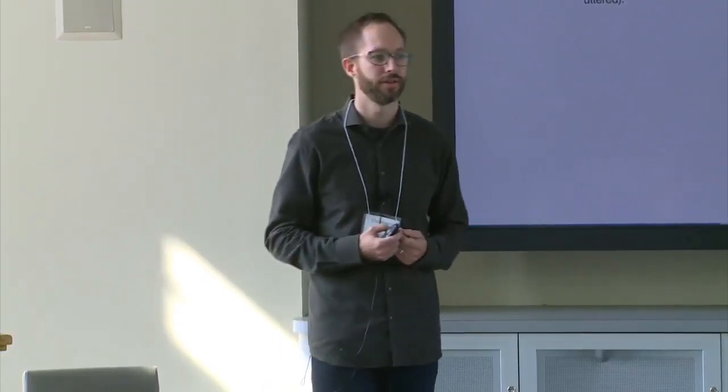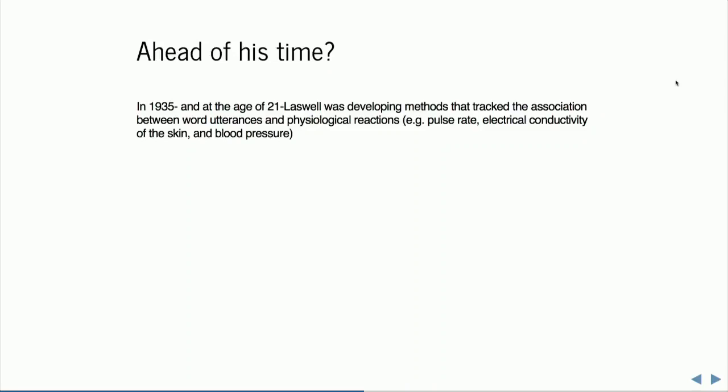Many folks don't know that Laswell also had people hooked up to heart rate monitor machines and was measuring physiometric properties of people as they spoke — measuring things like emotional activation around words. His interest in this initial post-war period was around propaganda. Later, in the aftermath of the Second World War, security concerns also drove text analysis. Ahead of his time — in 1935, at the age of 21 — Laswell was developing methods that tracked the association between words uttered and physiological reactions. Just a reminder that there are many who came before us. Neural nets have been around since 1950. What's changed is computing power, and that has implications for how we work with text. It's good to remember the genealogy of the ideas.